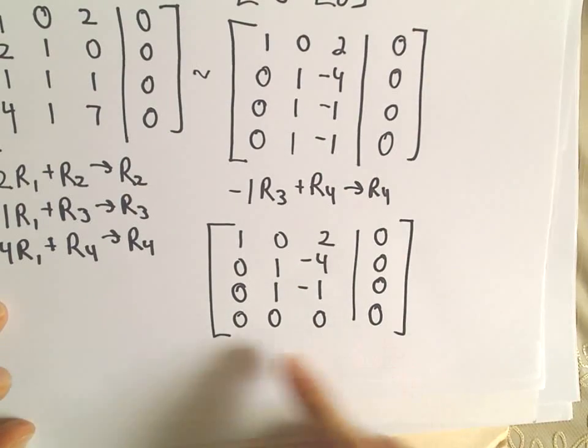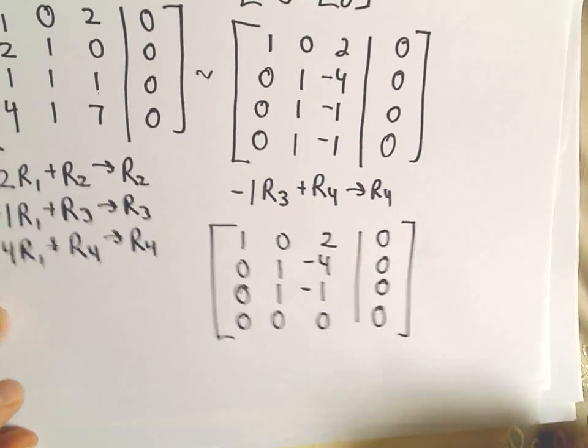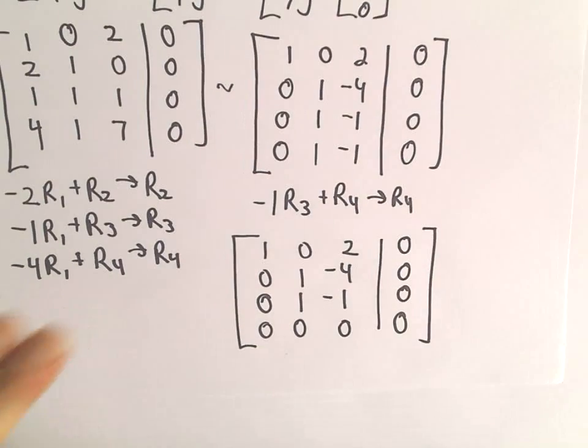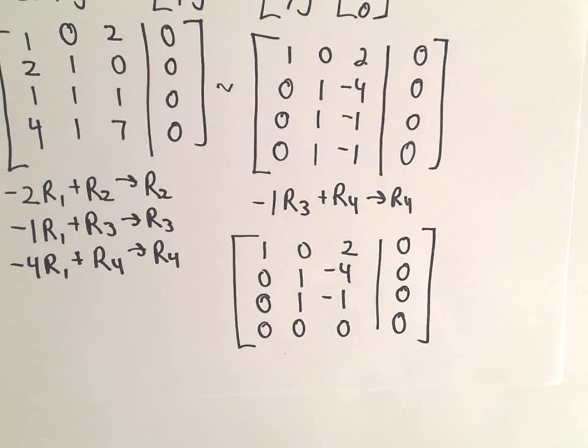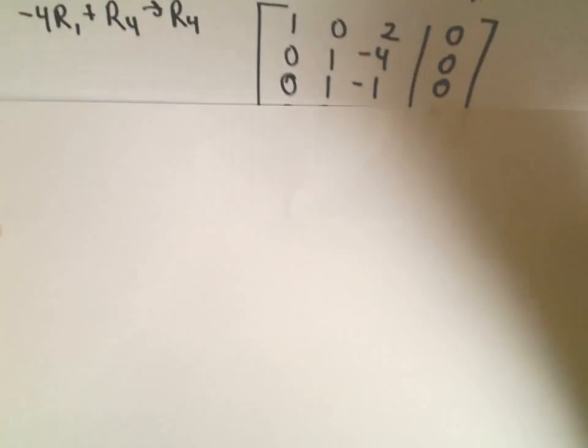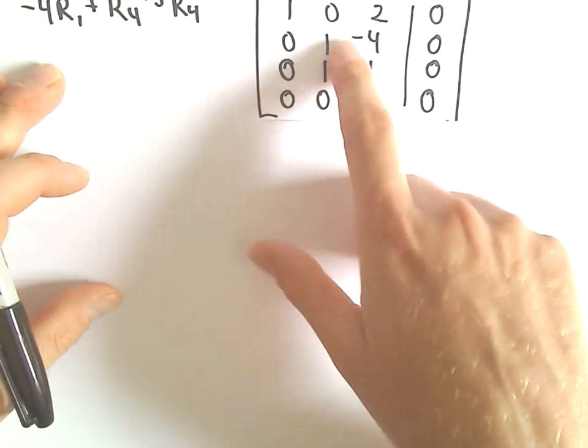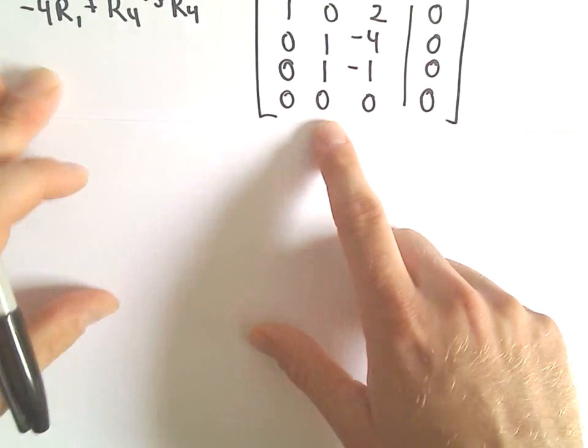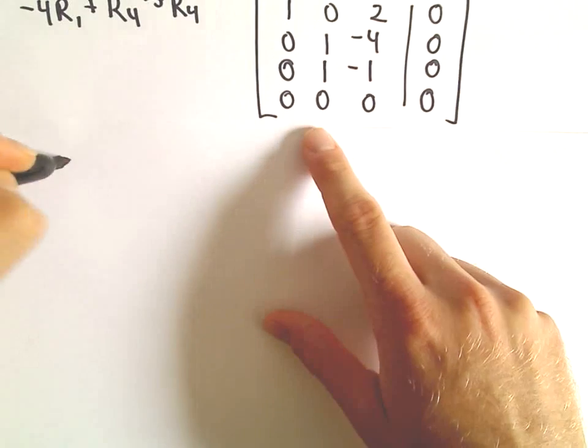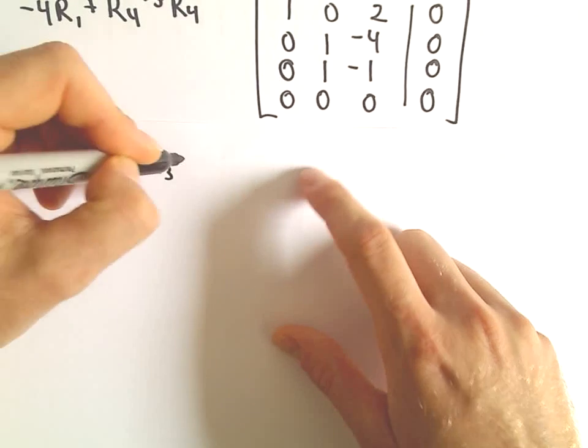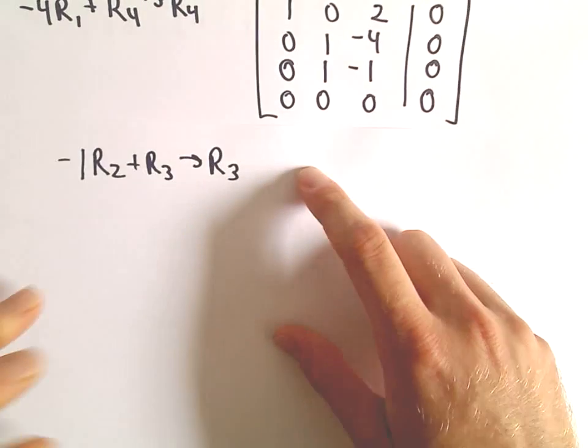So that's going to make the last row into 0's. Now you might think just because we have this row of 0's we have non-trivial solutions. But let's keep going just to make sure here, because in fact that's not correct. We've got our 1 in our second row, second column, that's good. So we can do negative 1 times row 2 and add that to row 3 to get my new row 3.